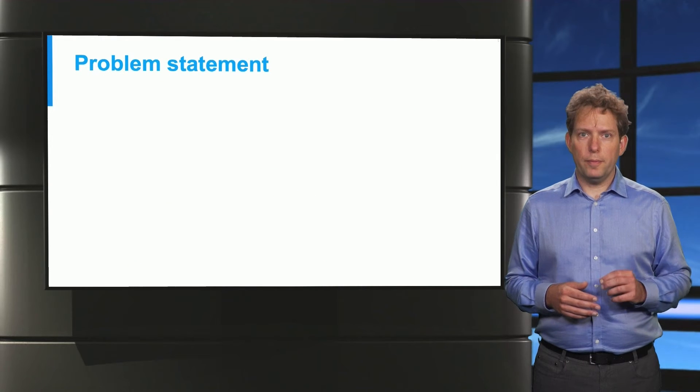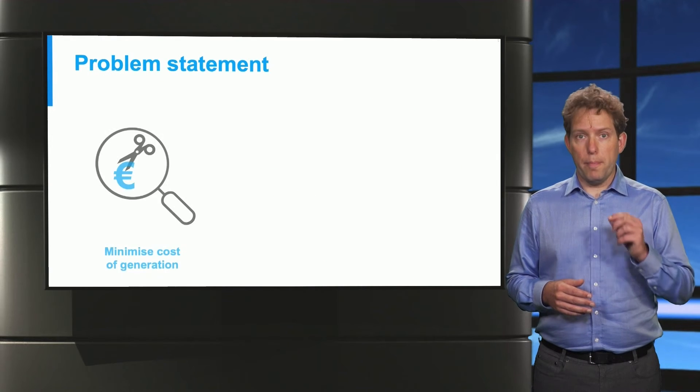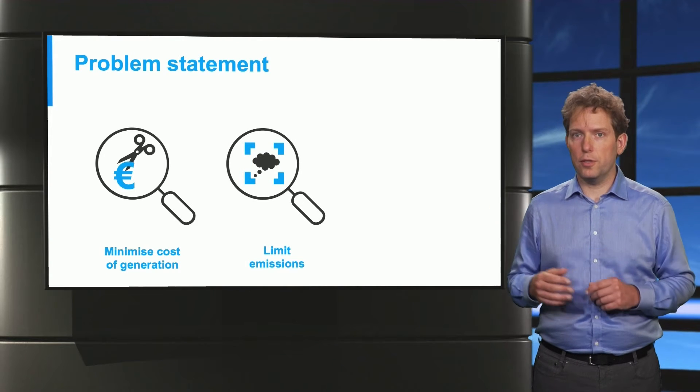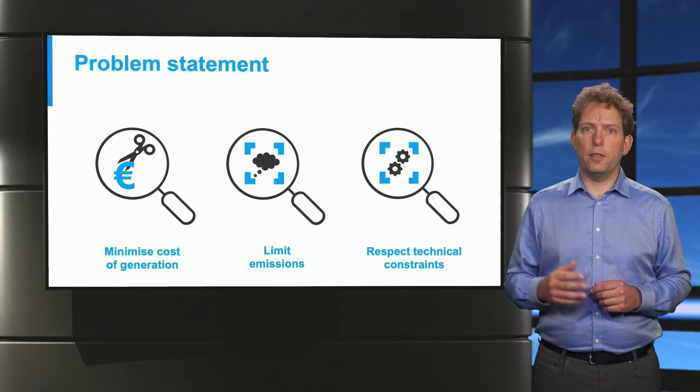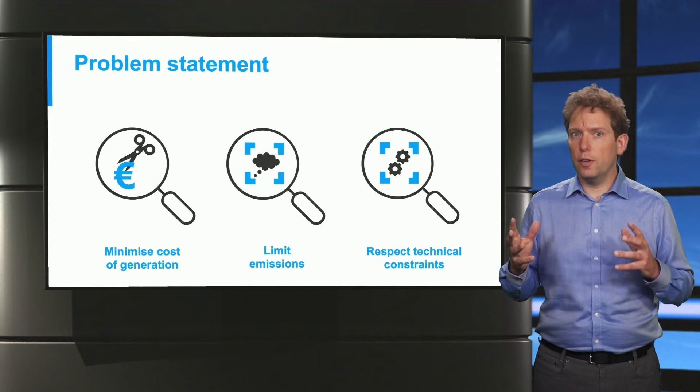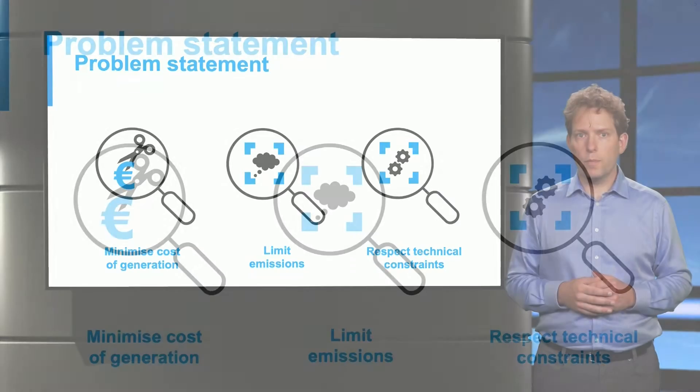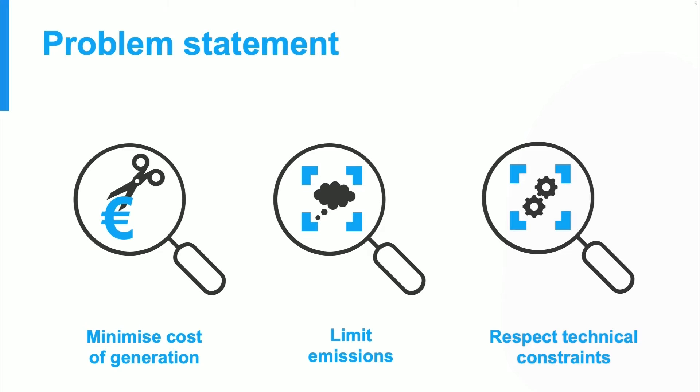In the economic dispatch problem, the challenge is to minimize the cost of generation while limiting the CO2 emissions and respecting the various technical constraints of the energy sources in our system. So let's start with the first of these elements, the cost of generation.